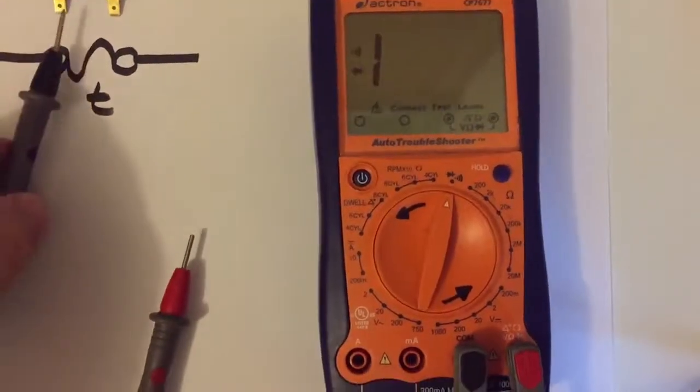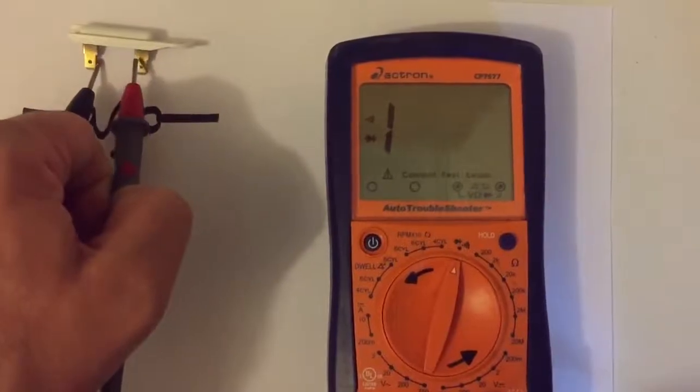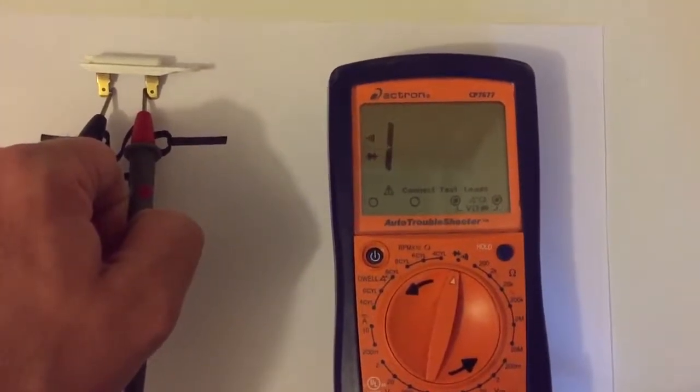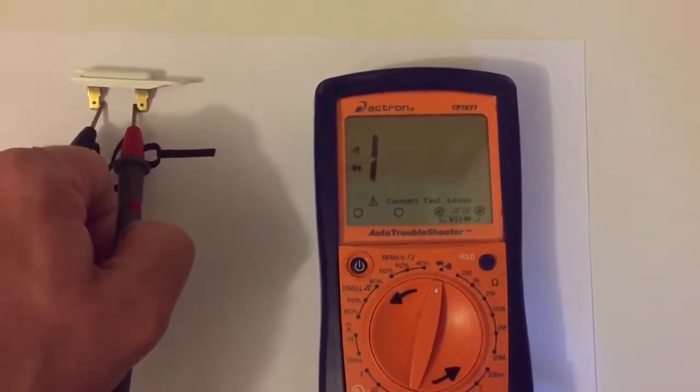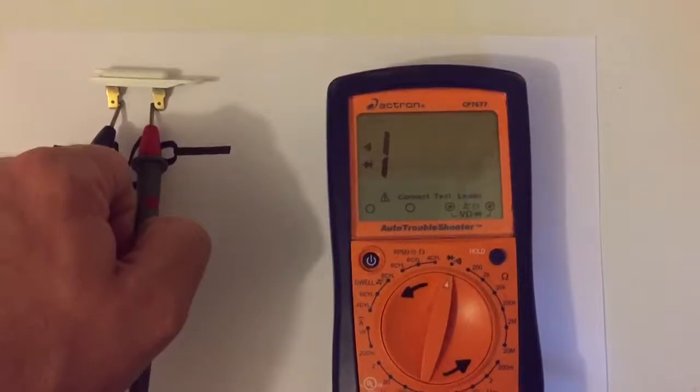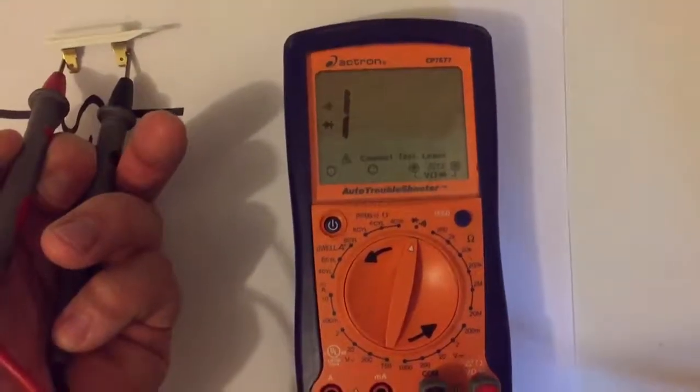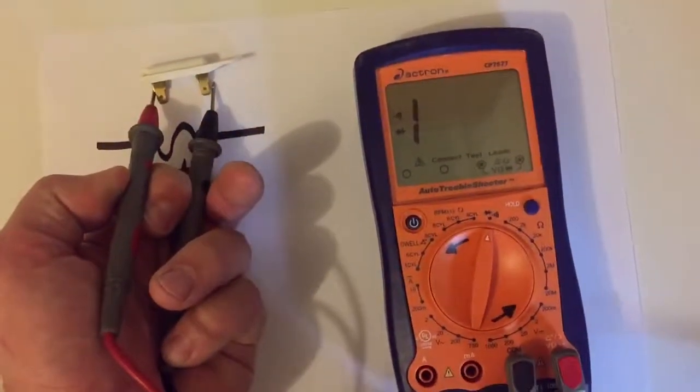Let's just know if there's a full current, just by touching the two leads. In this case, there's no current going through, so this is a bad thermal fuse. Doesn't matter which leads touch, there's no readings or no beep coming through.